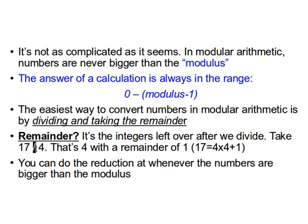Let's see some examples. For 34 mod 4: the input is positive and larger than the modulus, so we remove multiples of 4. The nearest multiple of 4 to 34 is 32 (8 times 4), and 34 minus 32 is 2, so the remainder is 2. For 19 mod 7: the nearest multiple of 7 is 14, and 19 minus 14 is 5, so the remainder is 5.